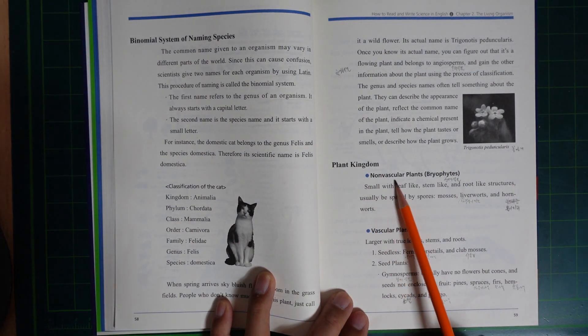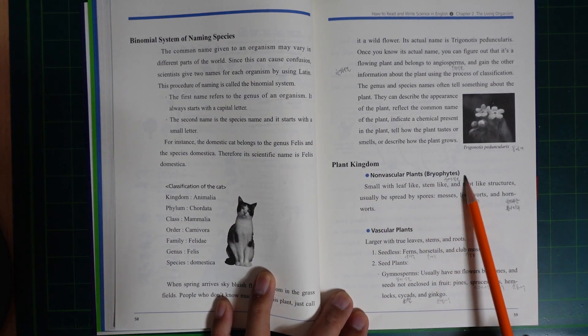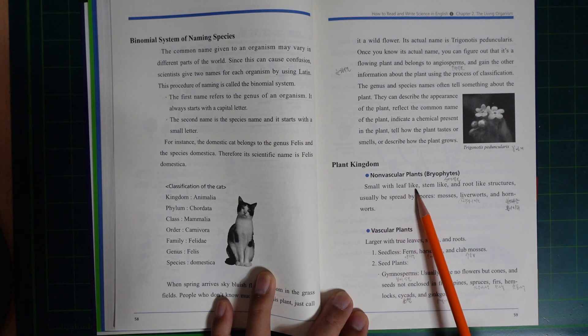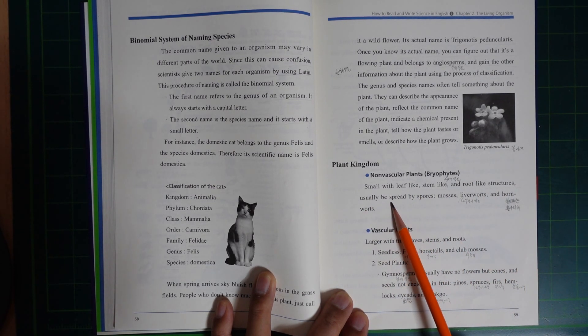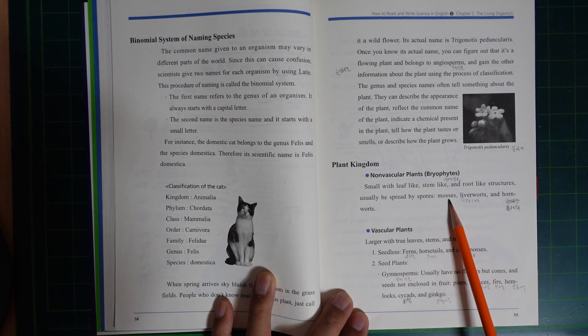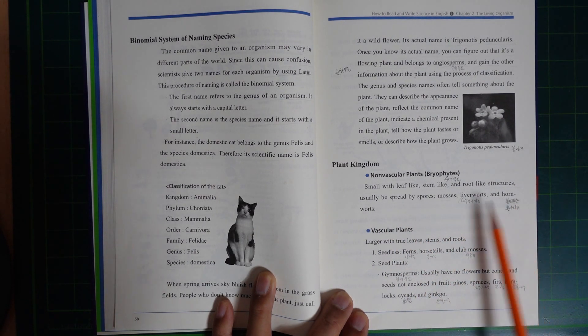Plant Kingdom. Non-vascular plants have leaf-like, stem-like, and root-like structures. They usually spread by spores, including moss, liverwort, and hornwort.